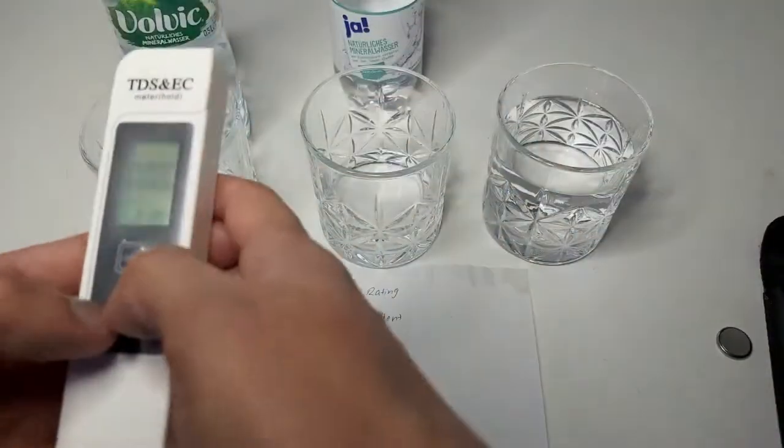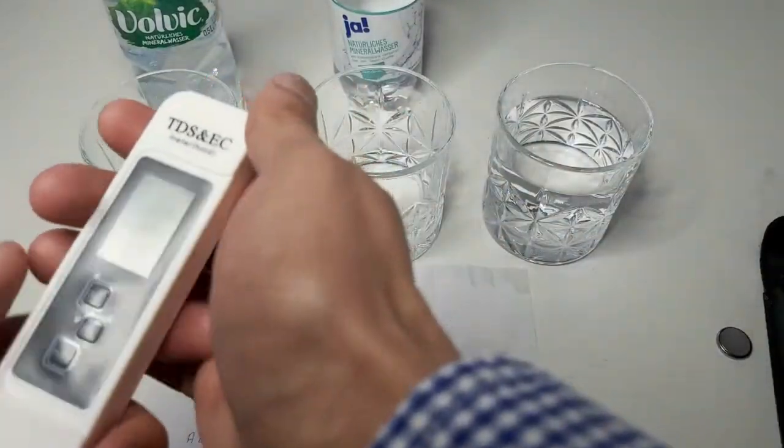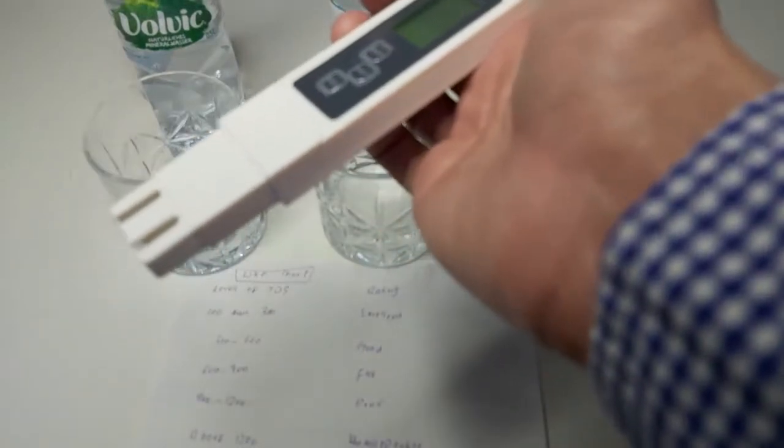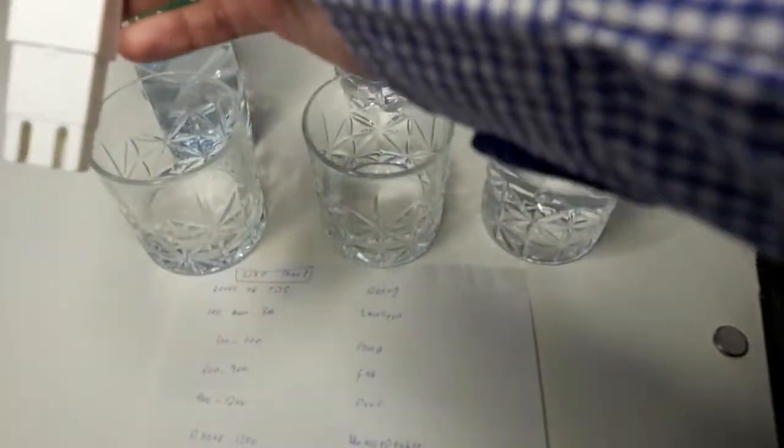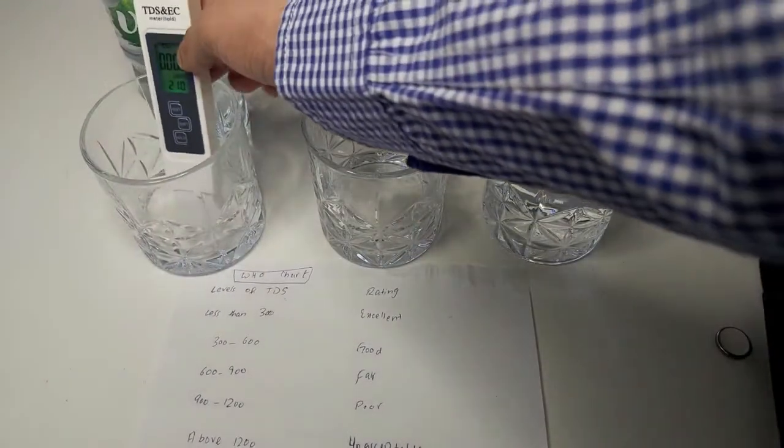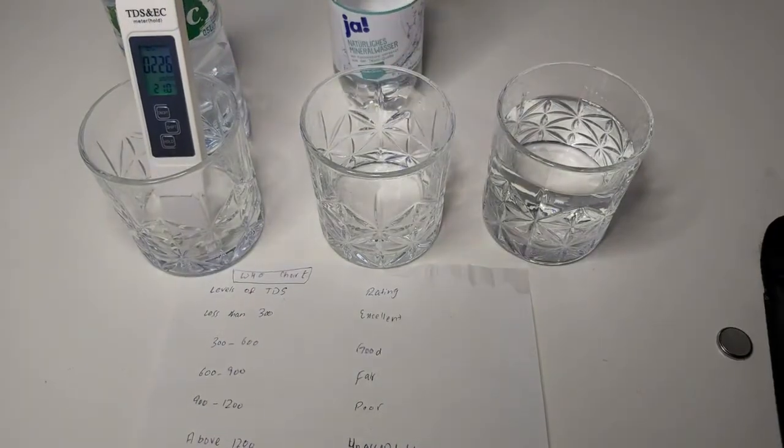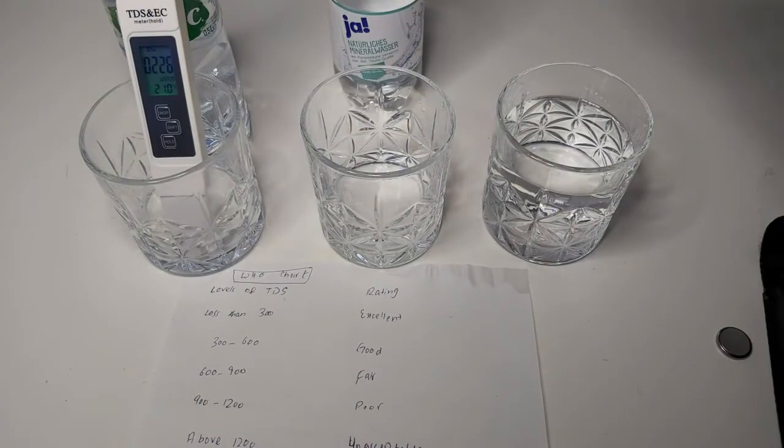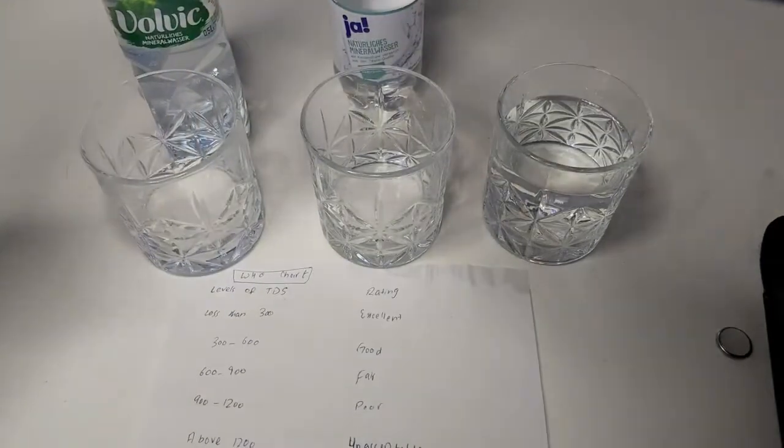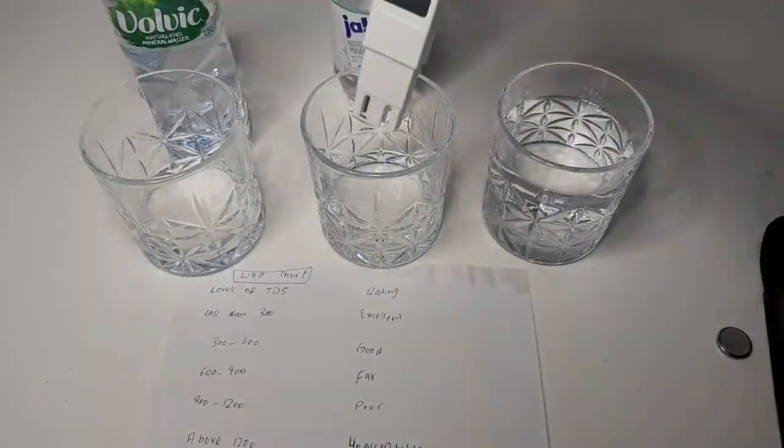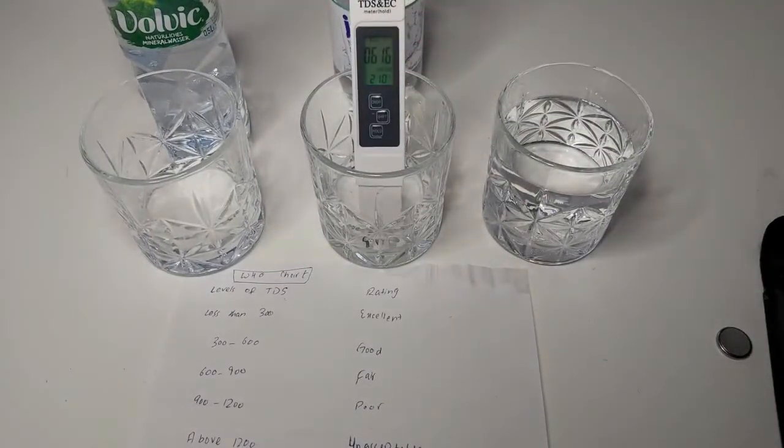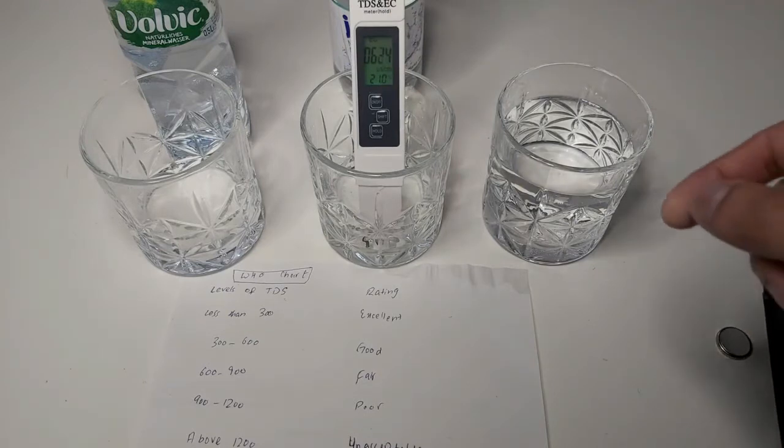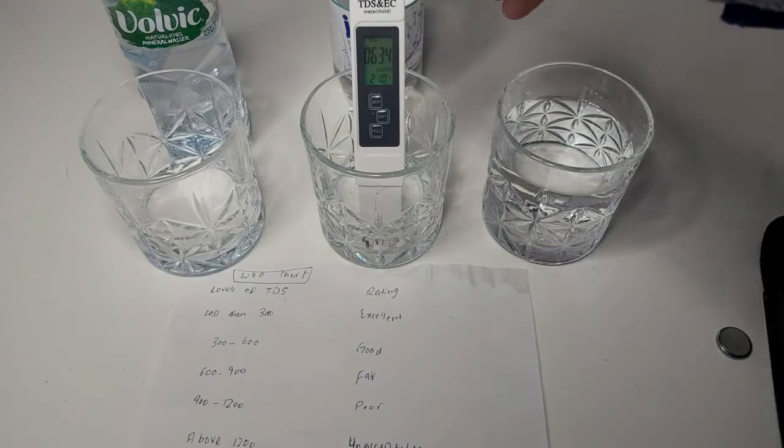So now we will shift the reading. Now we will measure the EC, electrical conductivity. First of all the Volvic water again. It's 228 to 226 to 228. Then the Yaa water. Because of gas it would be more I think, so it is 634.